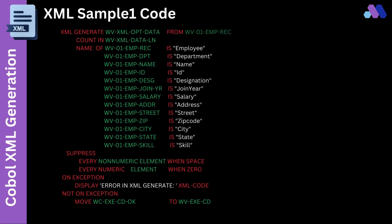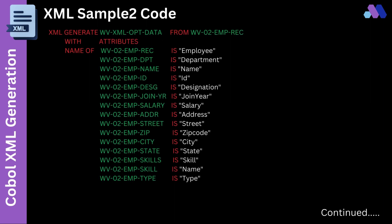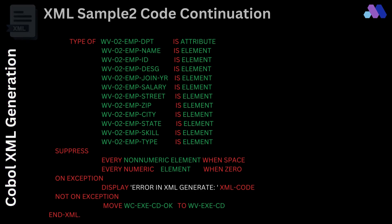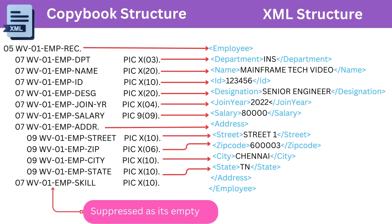Take a look at the COBOL code that will generate XML Sample 1. For Sample 2 generation, we are using With Attributes to denote that our XML contains attributes. The Type Of phrase is used to declare which data item is to be considered as an attribute. The copybook structure is designed to align with the output XML structure we need. We need the root tag of the element to be 'employee' in the output XML, so all data items are kept within the group level item named WV01-EMP-REC.